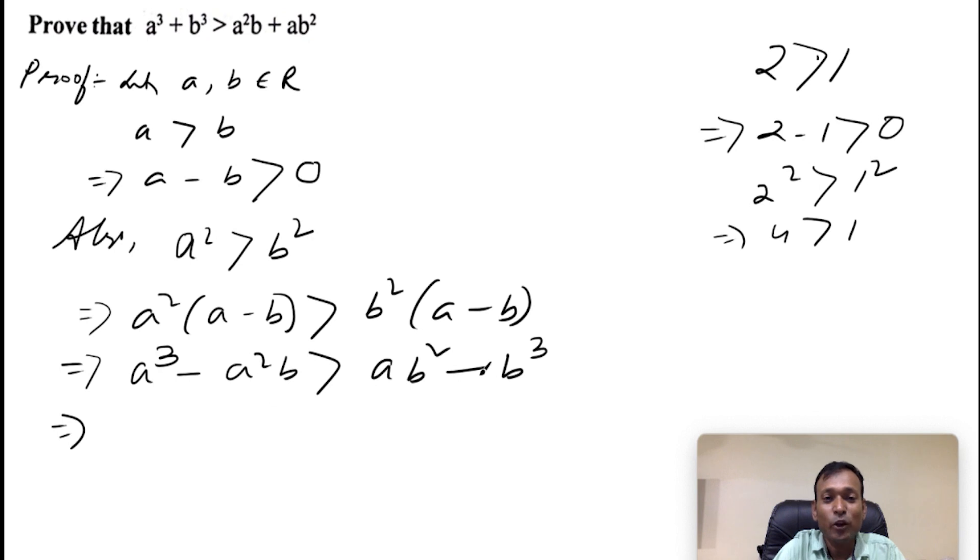Now, this a³ will bring to the left hand side, and this a²b will take to the right hand side. Because in proof, we have a³ + b³ in the left hand side. So here I have a³, and in the right hand side we have b³. So we will keep both the cubes in the left hand side and the rest in the right hand side. Okay.